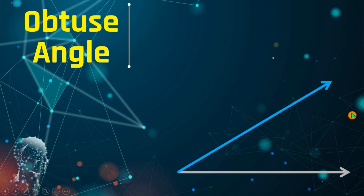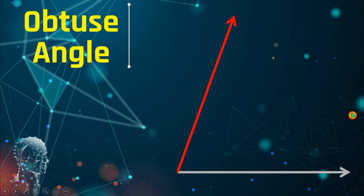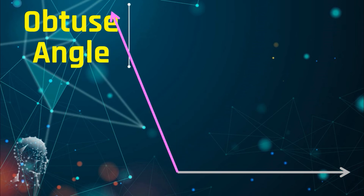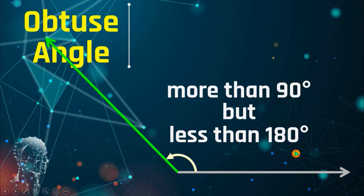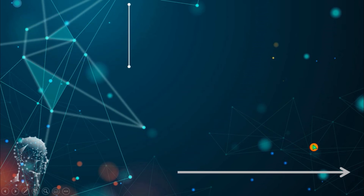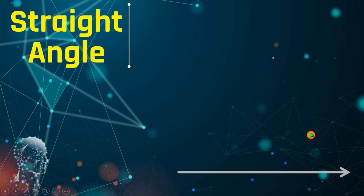Next, we have the obtuse angle. When do we say that we have an obtuse angle? You can see that the terminal side opens past 90 degrees. An obtuse angle has a measure of more than 90 degrees but less than 180 degrees.